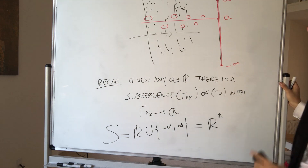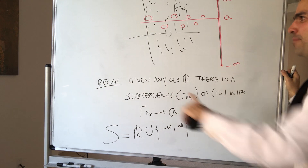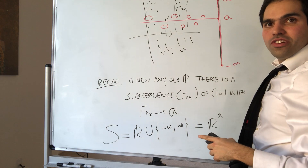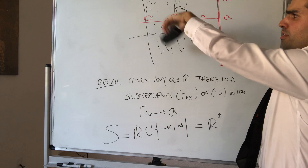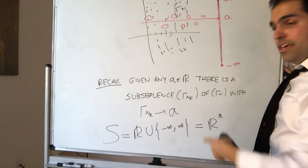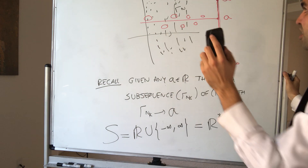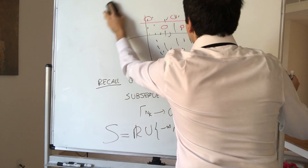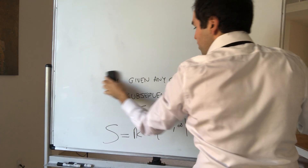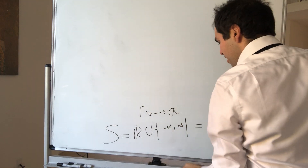That's really cool. Even though the rational numbers are countable — the sequence only has countably many values — the limit points are actually uncountable. It's all of R*. By the way, that's another definition of Q being dense in R: it means all the limit points are R*.